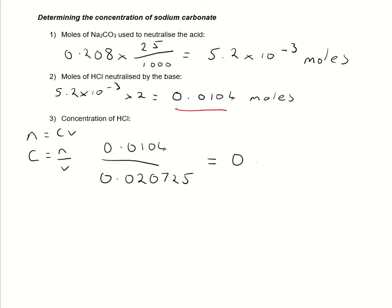So if you do that calculation there, I think I'm getting roughly 0.502M for my concentration of HCl. So that's the first part of the titration one.